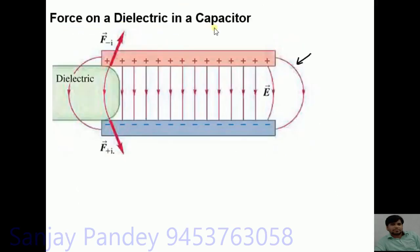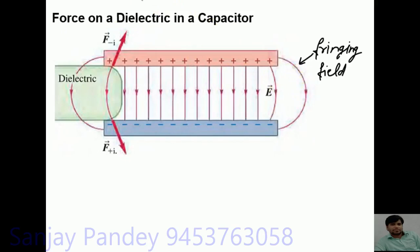Force on a dielectric in a capacitor. We have a charged capacitor. Near the ends of the plates, electric field lines are curved — this field is called the fringing field. If we place a dielectric slab in this fringing field, then due to induction, a negative induced charge is produced near the positively charged plate, and a positive induced charge is produced near the negatively charged plate.